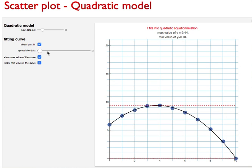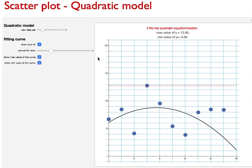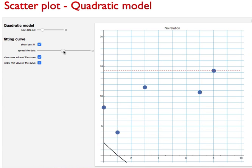You can get new data sets or spread the data. Now there's no relationship. This scatter plot doesn't follow any curve. No curve fits into this scatter plot.